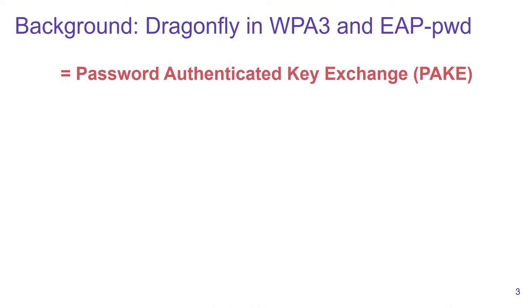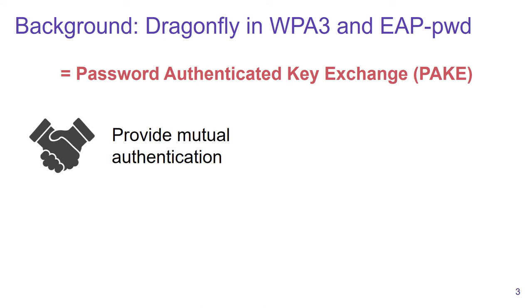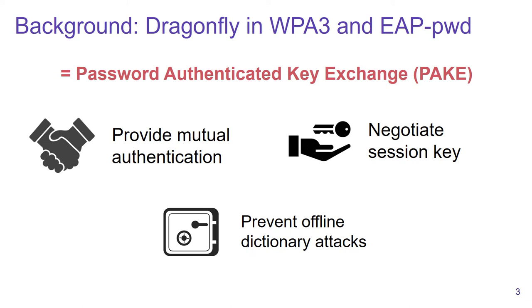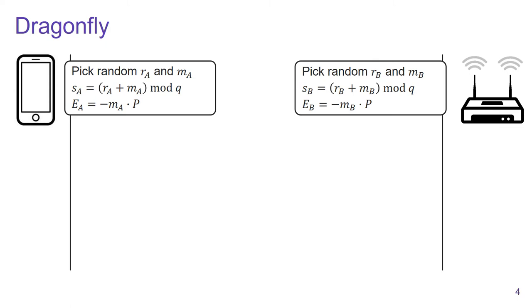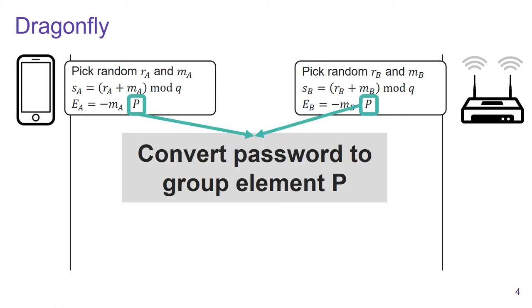Dragonfly is what we call a PAKE, and it provides the usual properties. It provides mutual authentication and negotiates a fresh session key. More importantly, Dragonfly defends against offline dictionary attacks, in contrast to WPA2. Before executing the Dragonfly handshake, the password, which may be stored in ASCII or Unicode, needs to be converted into a so-called group element P, and this group element can then be used in the cryptographic calculations of the handshake.